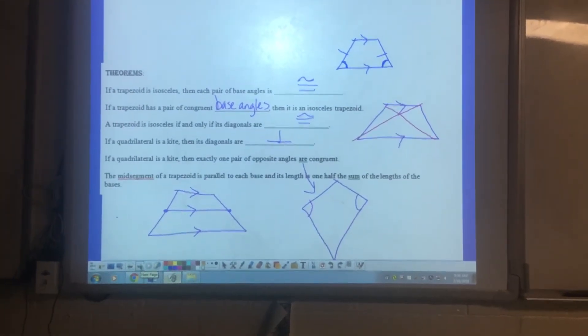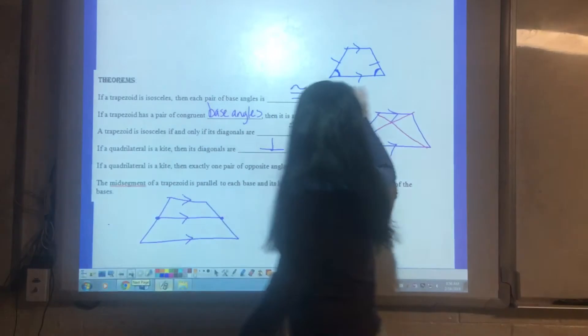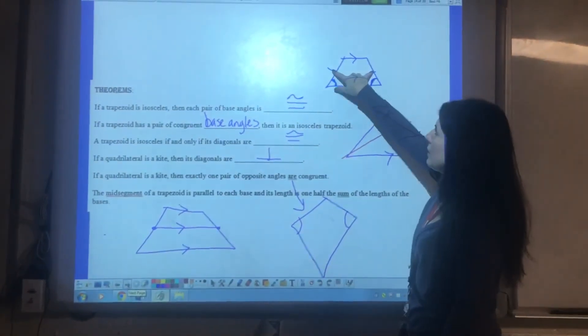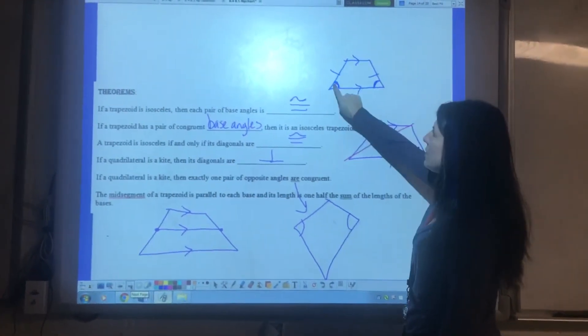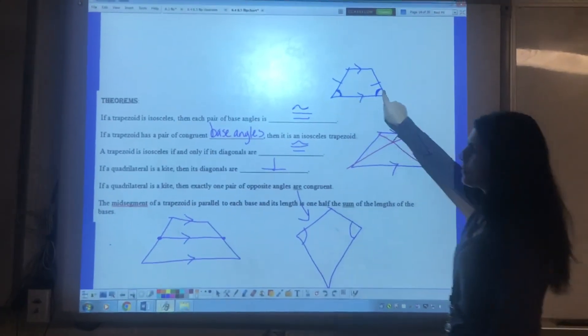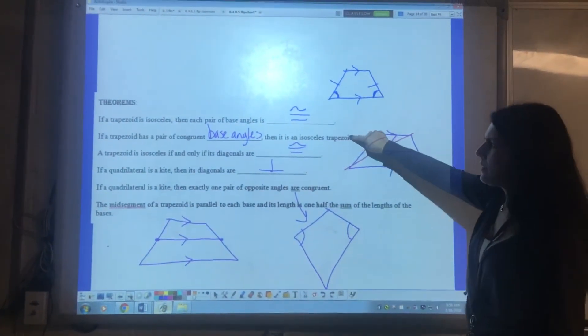New theorems. Isosceles trapezoid. Remember what that is. Same length. Parallel. But this theorem says that these base angles are congruent. They're the same. This is the same idea.